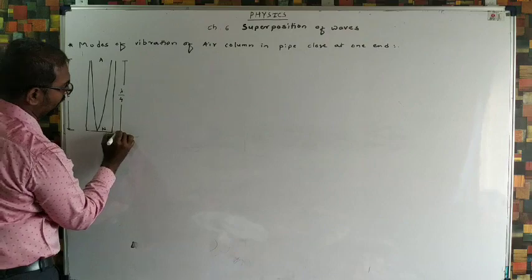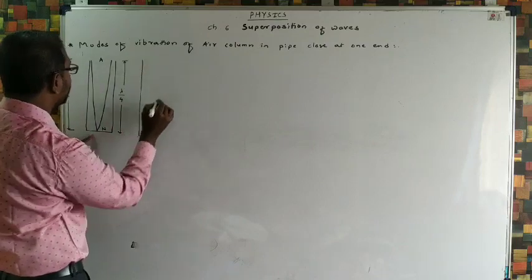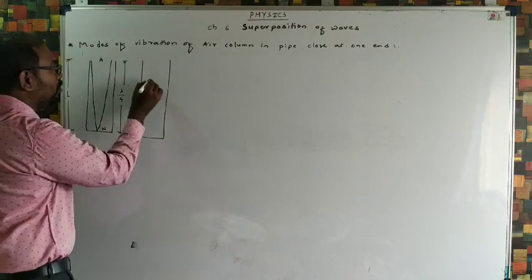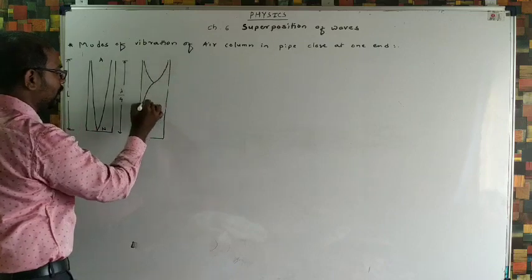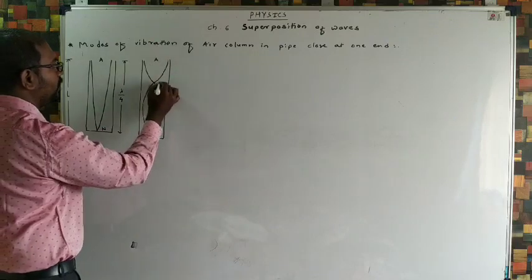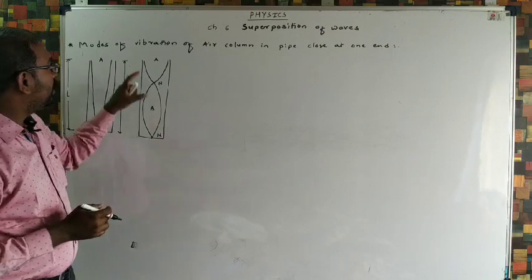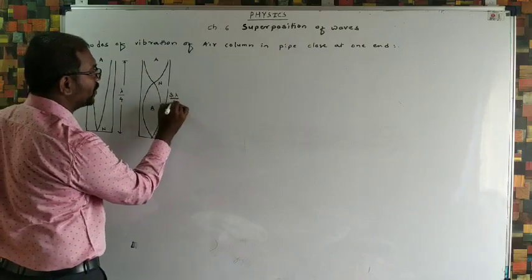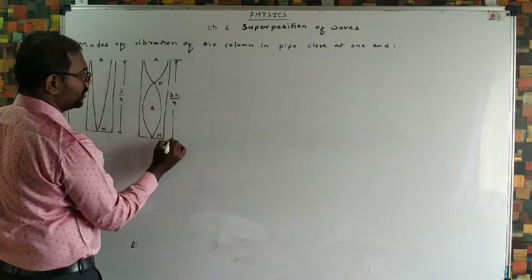For the second mode, we consider the same pipe of the same length. In that we consider one and a half loops — a half loop and one full loop. At the open end an antinode is formed, then node, antinode, node. This is the second mode of vibration. The distances between node and antinode are each λ₁/4, giving three times λ₁/4, so the total length L equals 3λ₁/4.